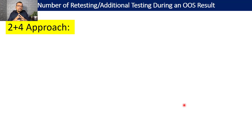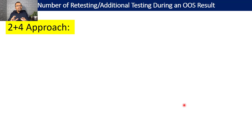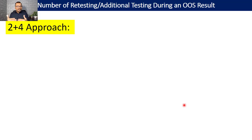Who should begin the additional testing — the original analyst or the second analyst? As per most industry practice, additional testing always begins with the second analyst. This is a precaution: if you begin with the original analyst, they may try to generate results into compliance — what is called testing into compliance. To avoid this and to have unbiased results, beginning additional testing with the second analyst is always preferred.